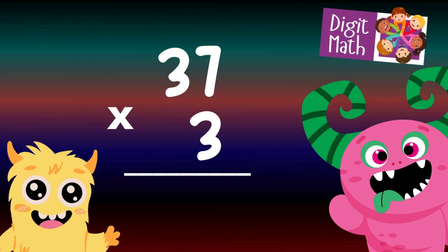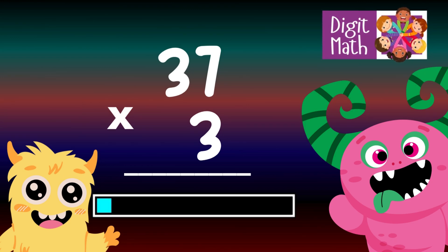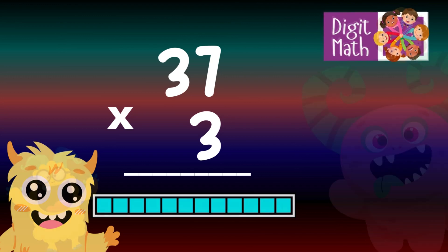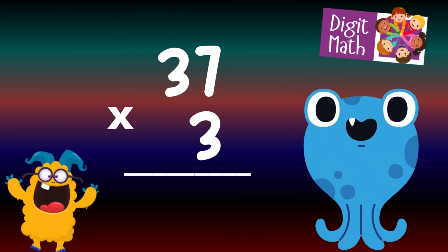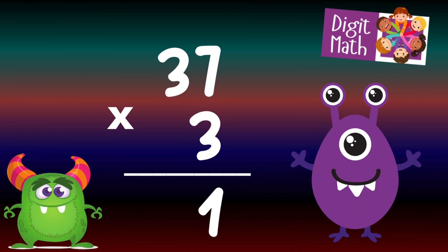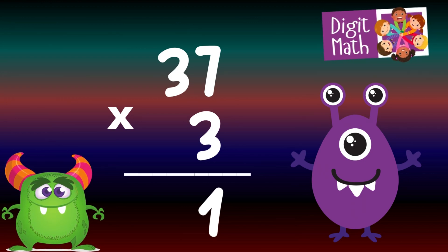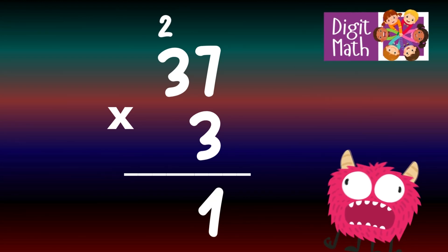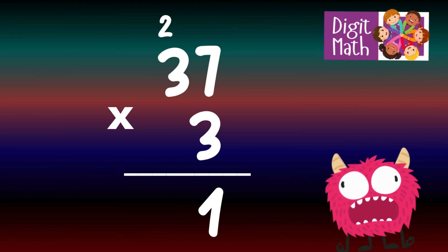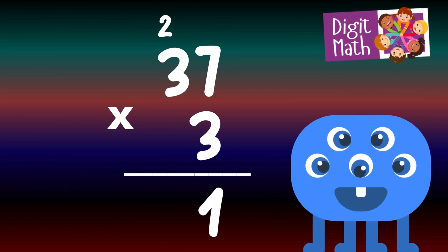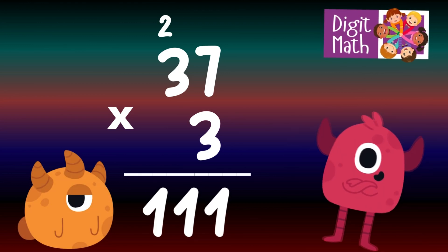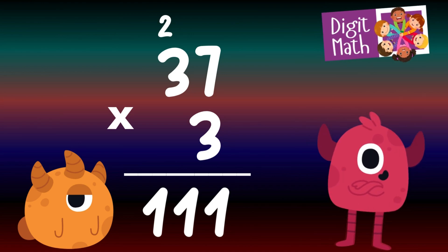37 times 3 — time to think. To solve, multiply 37 by 3. In the Units column, multiply 7 by 3, which equals 21. Place 1 in the Units column and carry over 2 to the Tens column. In the Tens column, multiply 3 by 3, which equals 9. Add the carried over 2 to 9, making 11. Place 11 in the Tens and Hundreds column. So the final result is 37 times 3 equals 111.